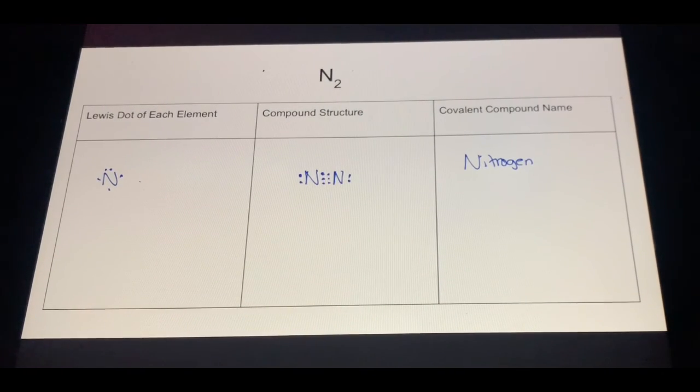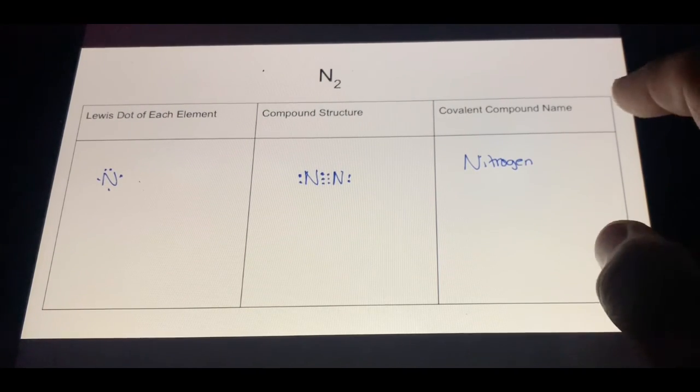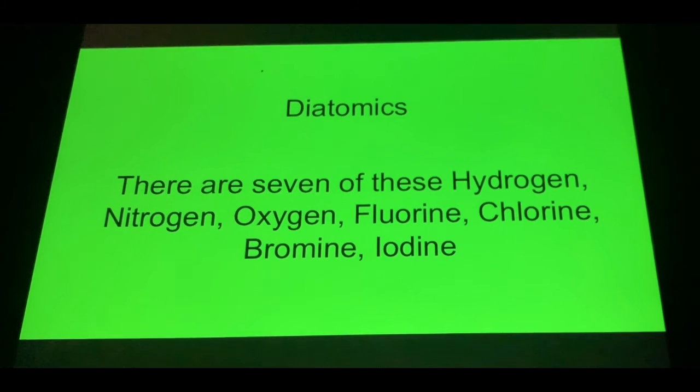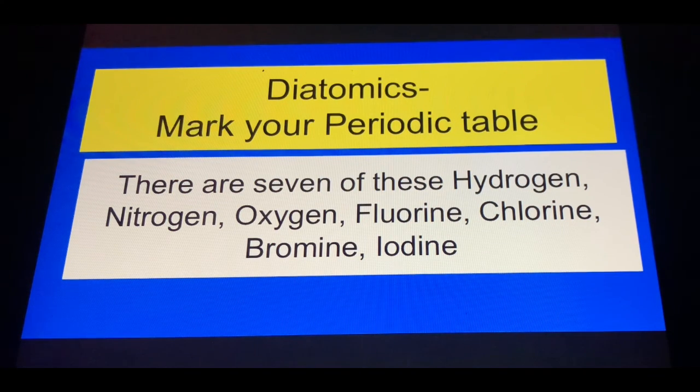Surprise! There are seven diatomics on the periodic table: hydrogen, nitrogen, oxygen, fluorine, chlorine, bromine, and iodine. You need to mark those up. Mark your periodic tables. There are seven of these, they're very special. They don't ever occur by themselves, so they're going to be N2, H2, O2, F2, Cl2, Br2, and I2. It's going to be important when we balance equations.